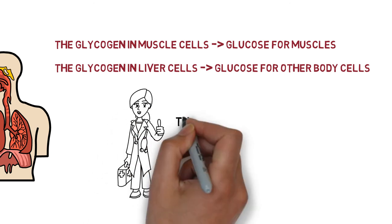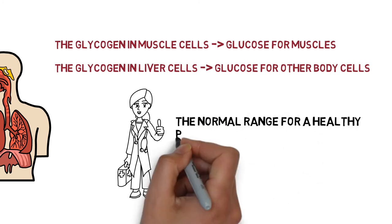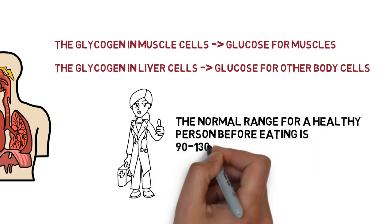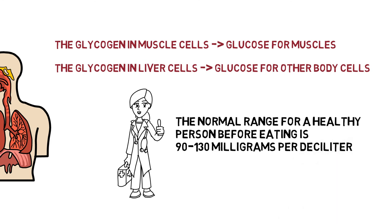The normal range for a healthy person before eating is 90 to 130 milligrams per deciliter. Maintaining glucose levels in the normal range is important for our health, and we should pay special attention to it.